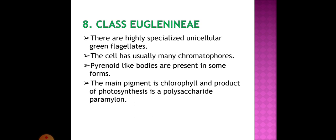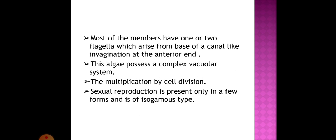Eighth class is Eugleninae — highly specialized unicellular green flagellates. The cell usually has many chromatophores; pyrenoid-like bodies are present in some forms. The main pigment is chlorophyll and the product of photosynthesis is a polysaccharide paramylon. Most members have one or two flagella which arise from the base of a canal-like invagination at the anterior end. These algae possess a complex vacuolar system. Multiplication is by cell division. Sexual reproduction is present only in a few forms and is of isogamous type.